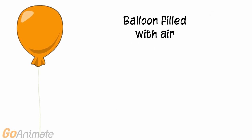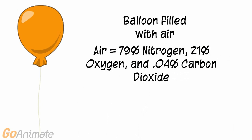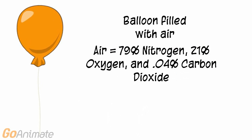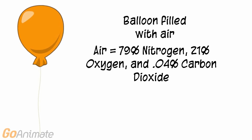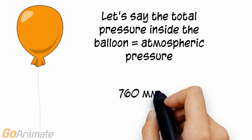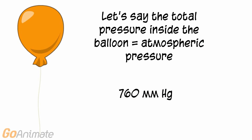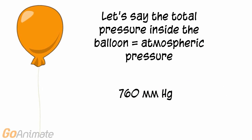We can use a balloon to illustrate Dalton's Law. The balloon is filled with air, which is a mixture of gases including about 79% nitrogen, 21% oxygen, and 0.04% carbon dioxide, along with some trace amounts of other gases. Let's say the total pressure inside the balloon equals atmospheric pressure, which is about 760 mmHg.